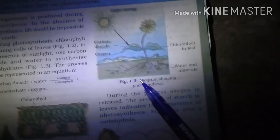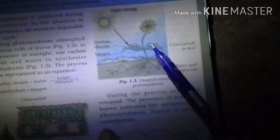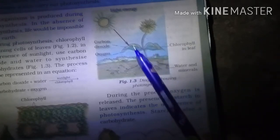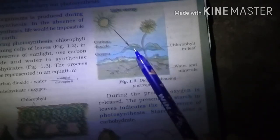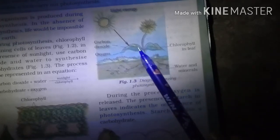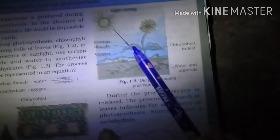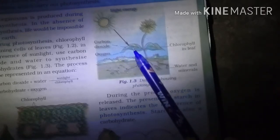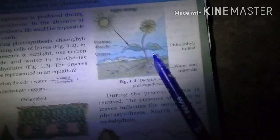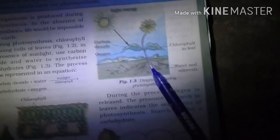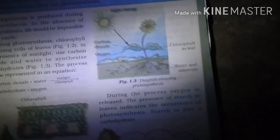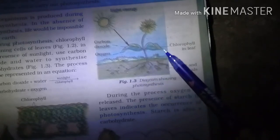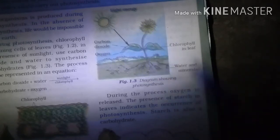This figure diagram shows photosynthesis. Light energy is trapped by the chlorophyll contained in the leaf. The stomata in the leaf absorb carbon dioxide from the atmosphere and release oxygen through the stomata. The roots absorb water and minerals, which are used for photosynthesis. The presence of starch in leaves indicates the occurrence of photosynthesis — starch is also a carbohydrate.